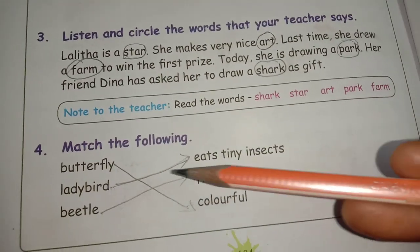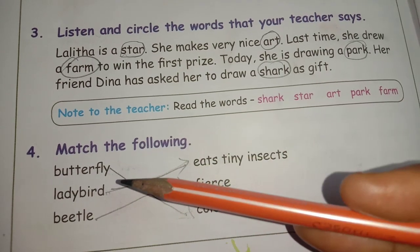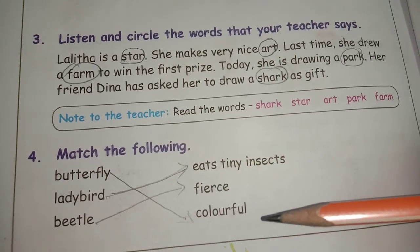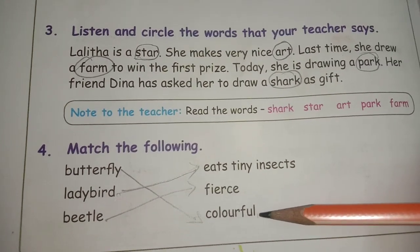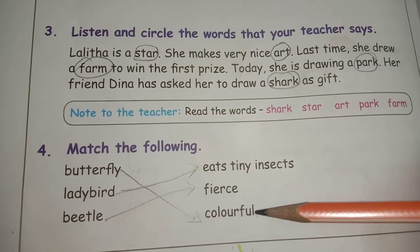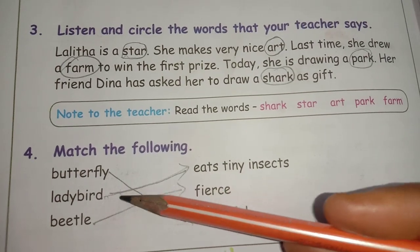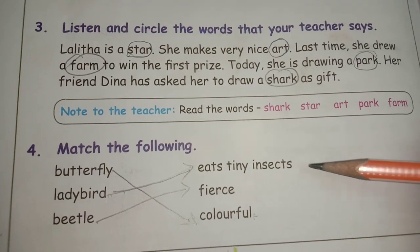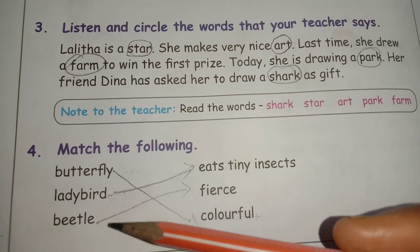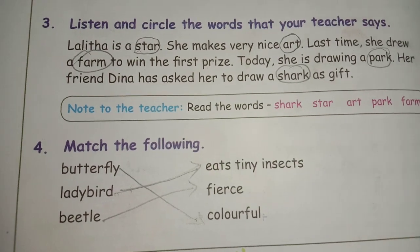Okay children, the next one is match the following. Butterfly — which is the right answer? Yes, butterfly looks so colorful, so this is the right answer. Ladybird eats tiny insects.